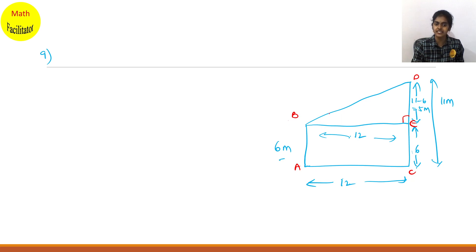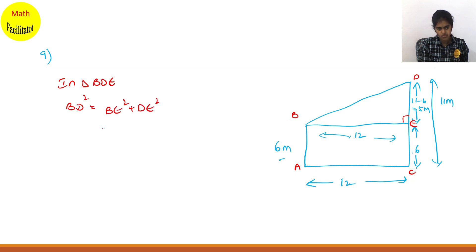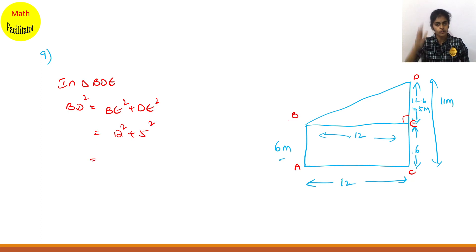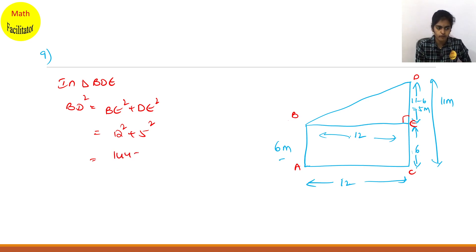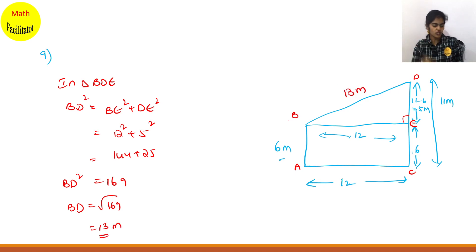You have to find the distance between the tops of the poles — that means you have to find BD. In triangle BDE: BD square equals BE square plus DE square. BE is 12, so 12 square plus DE is 5 — how did you get 5? Total is 11; subtracting 6 you get 5. So 144 plus 25 gives 169. BD square is 169, so BD equals root over 169, which is 13 meters. The distance between the tops of the two poles is 13 meters.